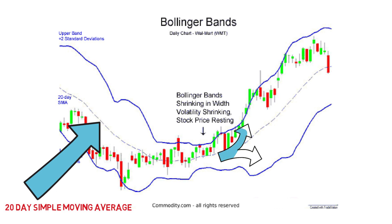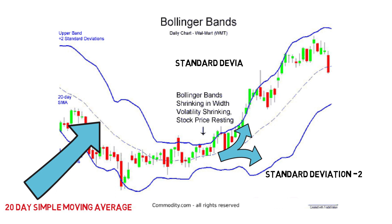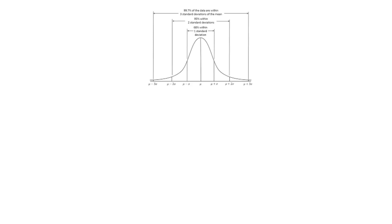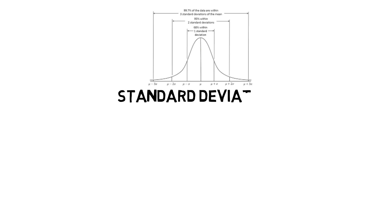Above and below that line in the blue is what is called the upper band and lower band, which represents the two standard deviation move plus and minus from a 20-day simple moving average. Standard deviation is a mathematical measurement of average variance and features prominently in statistics, economics, accounting, and finance. For a given data set, the standard deviation measures how spread out numbers are from an average value.